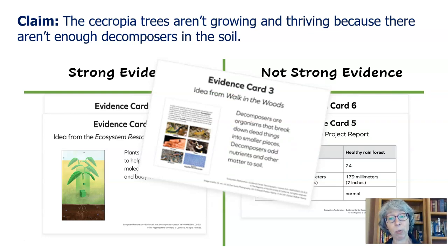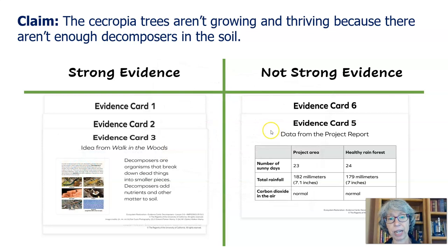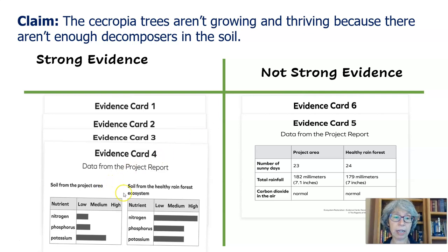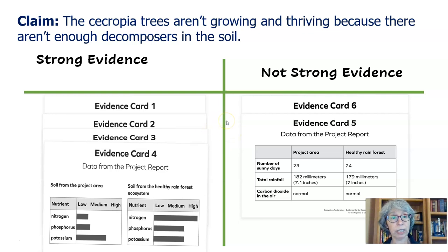Card five is from Walk in the Woods: decomposers are organisms that break down dead things into smaller pieces, and decomposers add nutrients and other matter to the soil. This gives us the role of how important decomposers are, so let's put it in the strong evidence category. Card six shows the nutrients found in both areas — low levels of nitrogen and phosphorus in the project area, while the healthy area has a lot more. Potassium is about the same. This could be used as evidence to support our claim. Now you are ready to use these evidence cards to help you write your scientific argument, and at any time you can move them around if you find they're not strong enough.